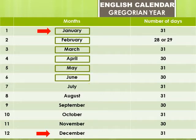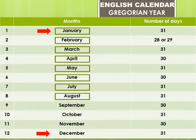The sixth month is June — J-U-N-E. June has 30 days. The seventh month is July — J-U-L-Y. July has 31 days. The eighth month is August — A-U-G-U-S-T. August has 31 days.